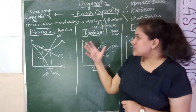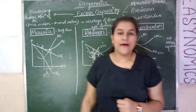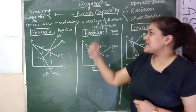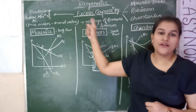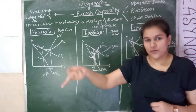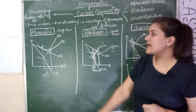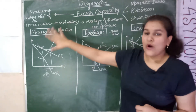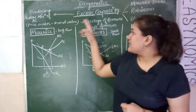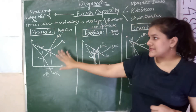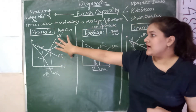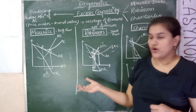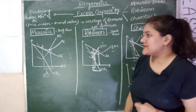This concept is known as excess capacity, which is unique to monopolistic competition or the imperfect competitive market. Now let's understand why excess capacity occurs by studying the Morris Dorp, Robinson, and Chamberlain models of excess capacity.